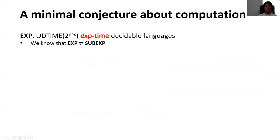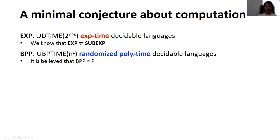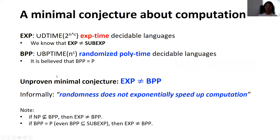Recall that EXP denotes the class of exponential time decidable languages, and we don't know that EXP is not equal to sub-EXP, so even a sub-exponential time algorithm cannot emulate exponential time computation. On the other hand, BPP denotes the class of randomized polynomial time decidable languages, and it is believed that BPP is equal to P. In other words, randomized polynomial time algorithms are as powerful as deterministic polynomial time algorithms. So our unproven minimal conjecture is EXP is not equal to BPP — informally, randomness does not exponentially speed up computation.